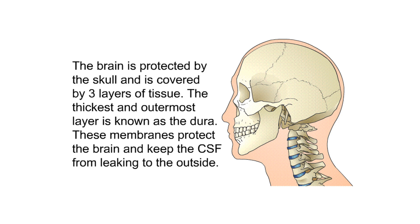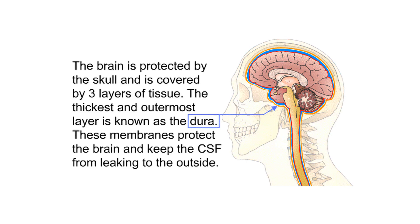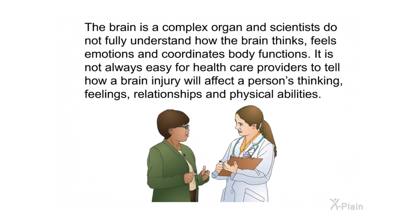The brain is protected by the skull and is covered by three layers of tissue. The thickest and outermost layer is known as the dura. These membranes protect the brain and keep the CSF from leaking to the outside. The brain has two main parts: the left and right hemispheres. Each hemisphere has specialized areas for movement, thinking, sensations, and feelings. If you injure your brain, different functions can be affected.